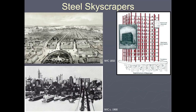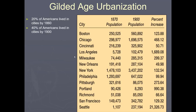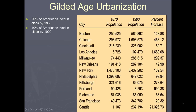Comparing New York City in 1850 versus 1900, you can see the skyline dominated with skyscrapers. Steel helped urban infrastructure — things like the Brooklyn Bridge, the George Washington Bridge, Grand Central Station — and that led to urban innovations like subway cars, elevated cars, cable cars (especially Chicago's elevated rails), elevators, and heating systems in the North. You can see a 123% increase in people moving to Chicago in 30 years. Los Angeles was also quickly growing, as was Seattle on the west coast.